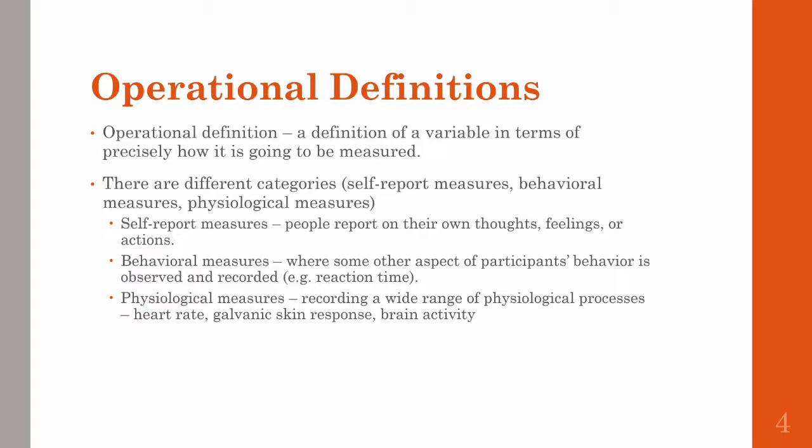There are different categories that these fall into. Self-report measures report on thoughts and feelings and actions. This could be like you taking a survey. Behavioral measures are when something about your behaviors are observed and recorded. This could be like someone recording how long it takes you to perform a given task. And there are physiological measures, and these are recordings of any type of physiological process, such as heart rate, galvanic skin response, or brain activity.